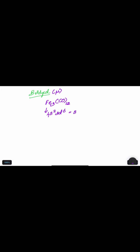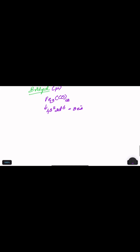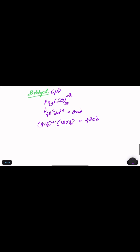From 4s to 3d6, the total number of electrons is 8 electrons. Since 3 metals are present, that's 8 × 3 = 24. For each carbonyl it is 2 electrons, and with 12 carbonyls that's 12 × 2 = 24. So the total number of electrons present here is 48 electrons.